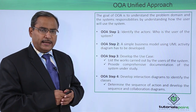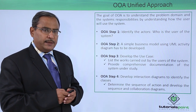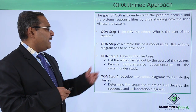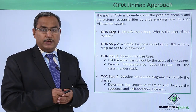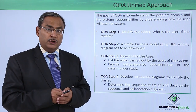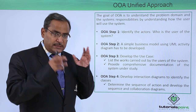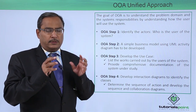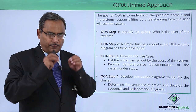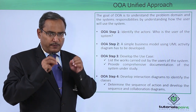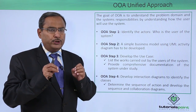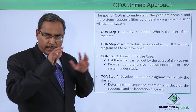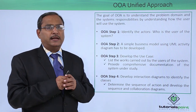Object Oriented Analysis Step 2: A simple business model using a UML Activity Diagram has to be developed. This business model will contain the list of operations or processes which will be initiated by these Actors, and they are to be represented in a certain diagram.